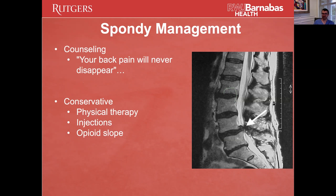When managing a spondy, the first thing I tell patients is to get their expectations in line with reality: your back pain will never completely disappear. If someone has knee pain and bad osteoarthritis, they can get a knee replacement — we don't have a spine replacement yet. Because arthritis is usually diffuse, you can't just eliminate back pain. You can fuse across a particularly bad joint and that will often help, but I tell patients this is a palliative situation where we're just trying to make it better.